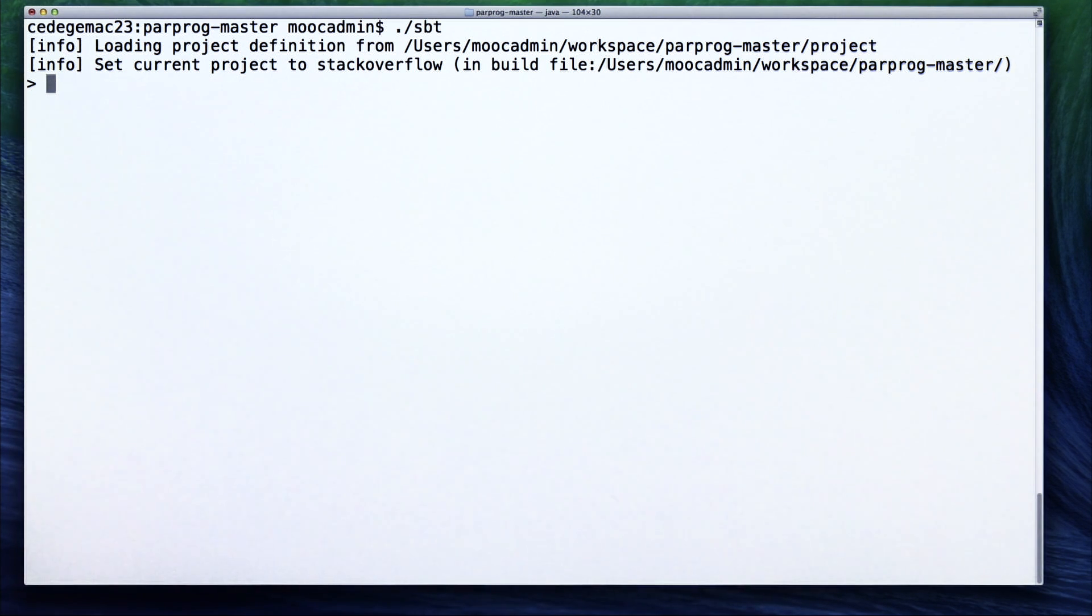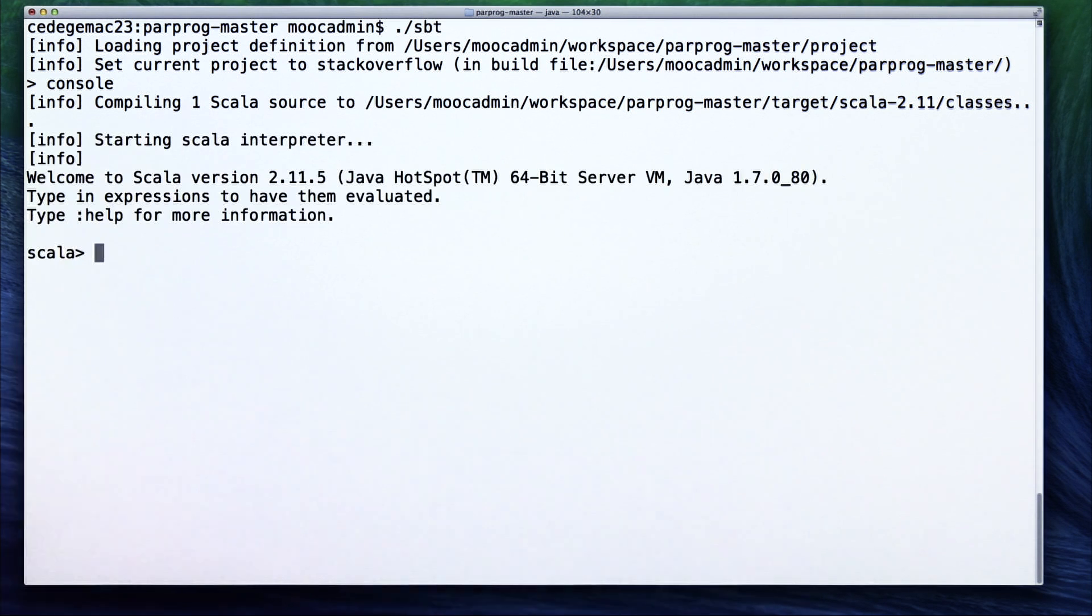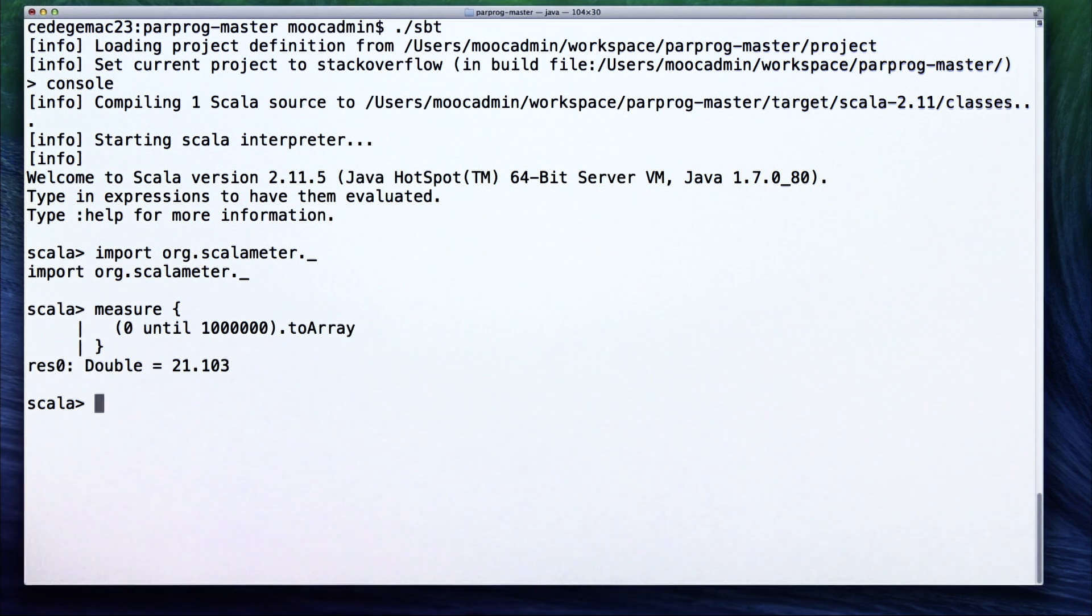So let's see how we can do this from the SBT interactive shell. First we start the Scala console. Then we import the Scalameter package. Finally, we measure the running time of our snippet.